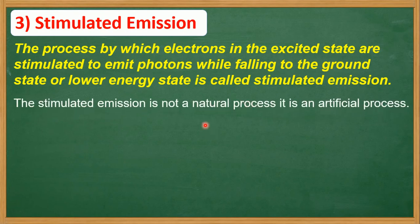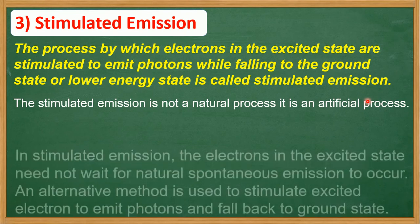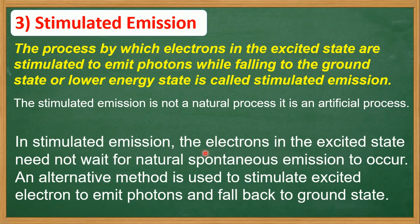Stimulated emission is not a natural process — it is an artificial process. Spontaneous emission was a natural process because the electrons in the excited state were not stimulated by any external means. In stimulated emission, an alternative method is used to stimulate excited electrons to emit photons and fall back to the ground state.